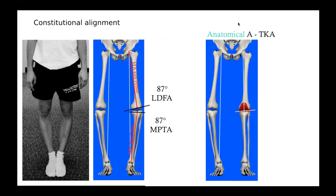For the anatomical alignment technique, the goal is to create a straight limb with a joint line two to three degrees oblique. The implants are aligned on the long bone mechanical axis — the tibia is implanted with three degrees varus and the femoral component with three degrees valgus. However, 'anatomical' is not entirely adequate to describe this technique, because when performing anatomical alignment the surgeon does not consider the individual unique knee anatomy. In my opinion, a 'joint line adjusted mechanical alignment' technique is more appropriate, since the implants remain aligned on the long bone mechanical axis and are slightly adjusted to create a slightly oblique joint line.